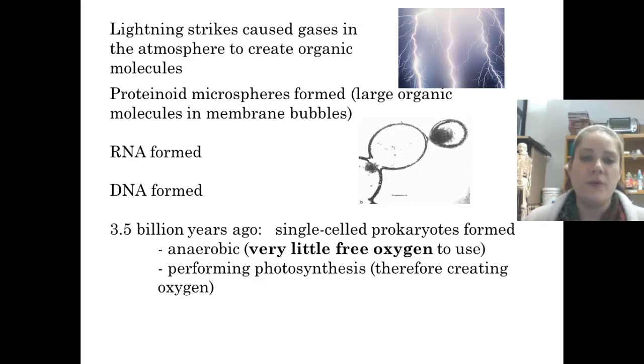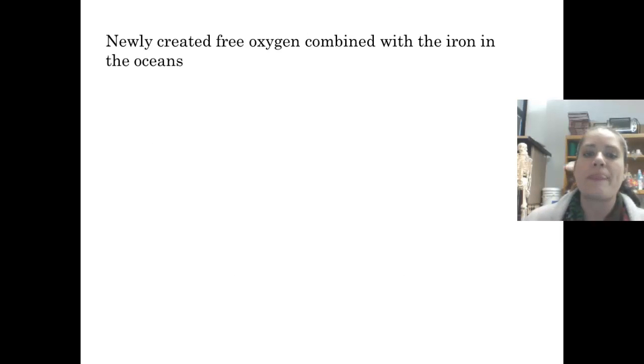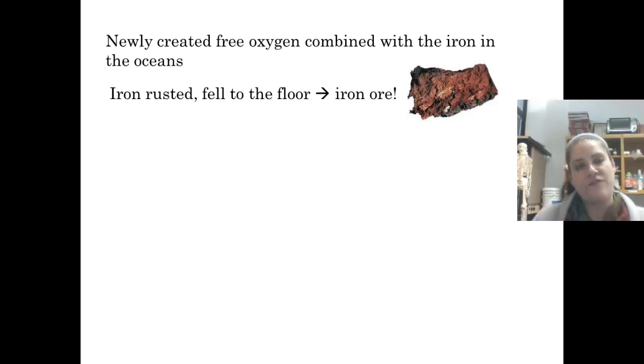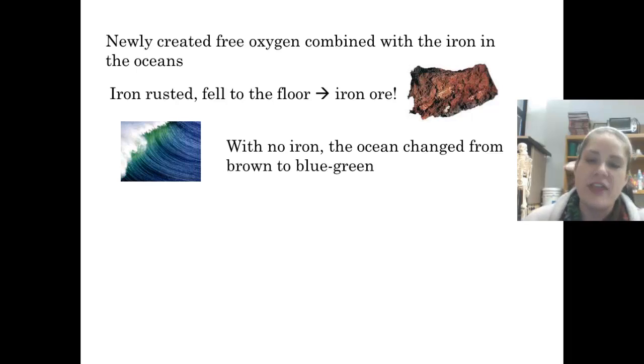Well, you should know that performing photosynthesis or going through that process of creating their own food created oxygen. Because we know photosynthesis. One of the things that goes out is oxygen. So that newly created free oxygen, that oxygen combined with the iron that was in the ocean. So there's all this iron floating around in the oceans. Well, when you take oxygen and iron, what happens? Think about if you leave your bike out in the rain. Oxygen and iron oxidize and you get rust. And so all of that iron rusted and fell down to the ocean floor. When it fell down to the ocean floor, that's where we got iron ore. So all that iron that we go dig up as iron ore, that's how it got to be down there. Once all the iron got taken out, the ocean changed from this really gross reddish-brownish color to the beautiful blue-green that we think of.